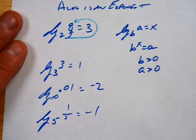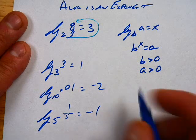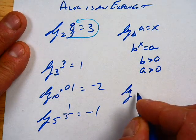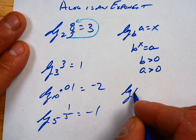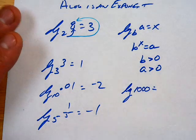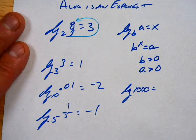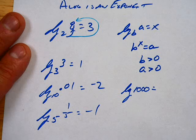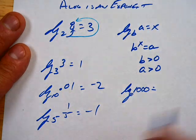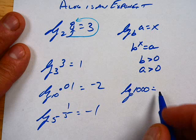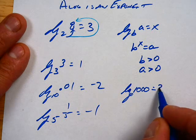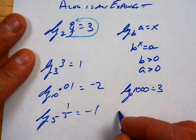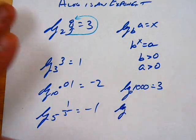Log base 5 of 1 fifth. Negative 1. 5 to the negative 1 gives me 1 fifth. Because it just flips it. So log of 1,000. What's going on? 10. 3. Because my base is 10, right? So that's a common log. The common log has a base 10. So that'd be equal to 3.